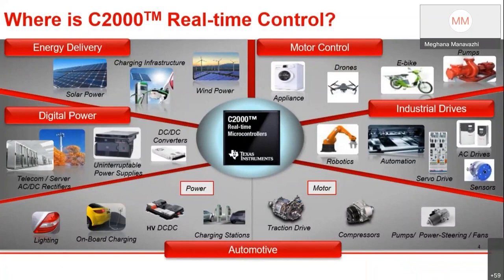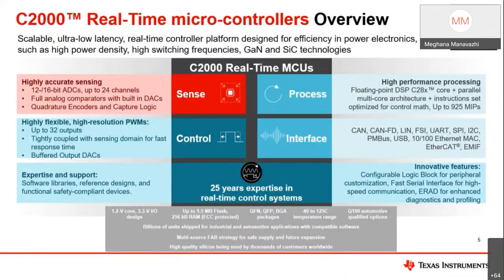C2000 has been traditionally playing in the space of motor control, but for the past several years we've expanded into a lot of different end equipment across automotive and industrial segments. All of them are tied by that common thread of being real-time controlled. From an overview perspective, we have over two decades of experience in real-time control, and we're working to improve the pillars of the real-time signal chain — sensing, processing, control, and interface aspects.